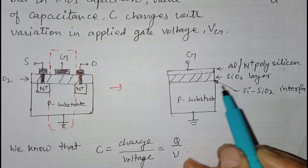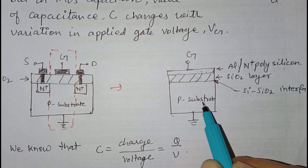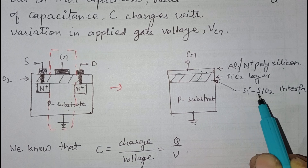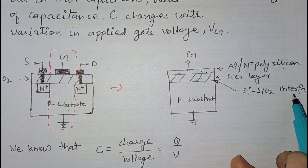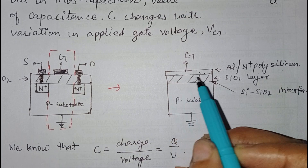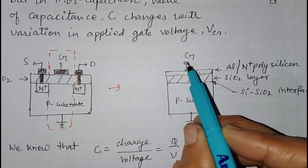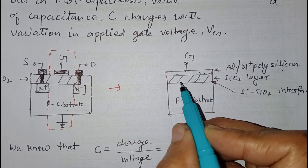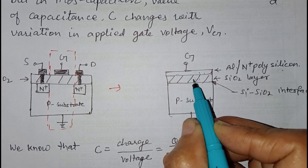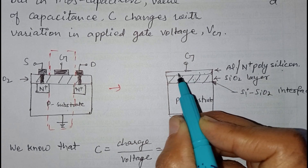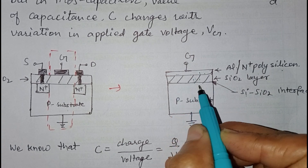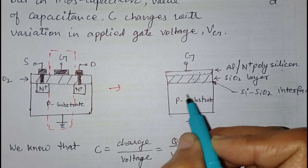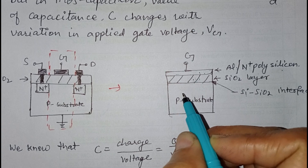This is the p-type substrate. The interface of the silicon dioxide layer and this p-type substrate is known as the silicon–silicon dioxide interface. When we apply voltage at the gate terminal, charges are introduced on either side of the oxide layer, so it will act as a capacitor.